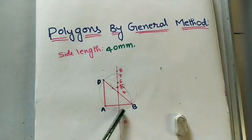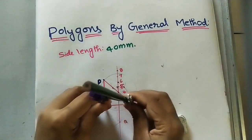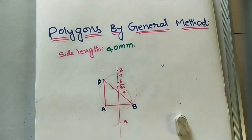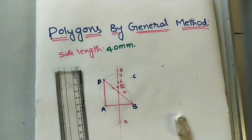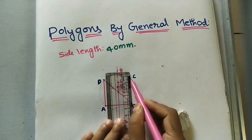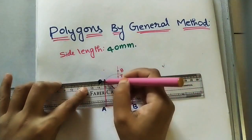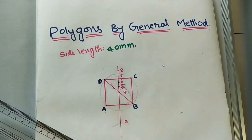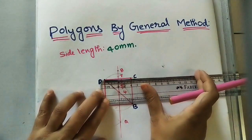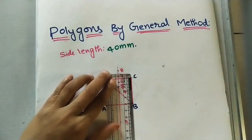We already have two adjacent lines. We need to mark point C — since the side length is four centimeters, with the same center do an arc to get point C. Join B-C and C-D. So A-B-C-D is a square with four as center. Check all the lengths are four centimeters — this is four centimeters, and this one is also four centimeters.